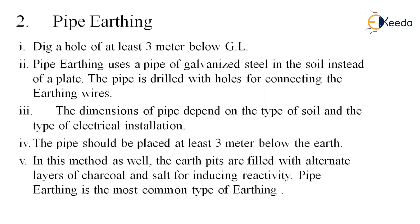Now, pipe earthing. The same procedure applies — dig at least 3 meters below ground level. Pipe earthing uses a pipe of galvanized steel inserted vertically into the soil instead of a plate. The pipe is drilled with holes for connecting the earthing wire. The dimensions of the pipe depend on the type of soil and the type of electrical installation, which can be consulted from the IS code. The pipe should be placed at least 3 meters below the earth. The earth pit is filled with alternate layers of charcoal and salt. Pipe earthing is the most common type of earthing.